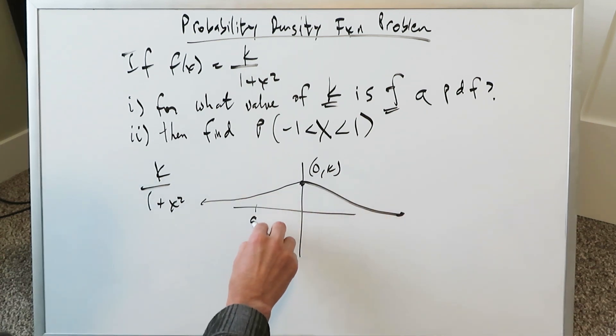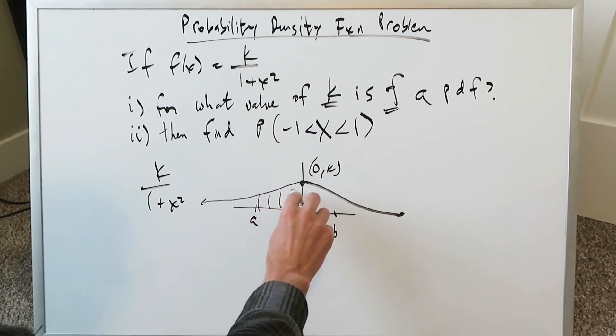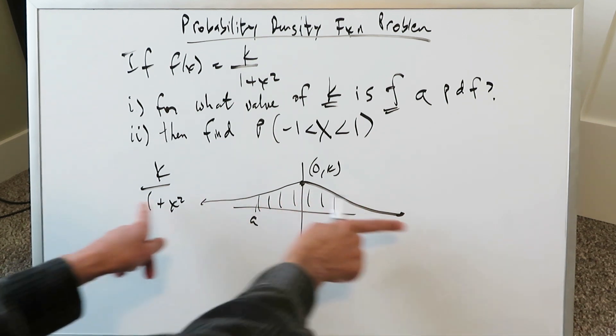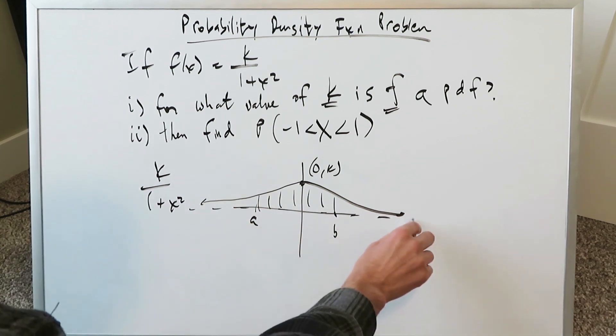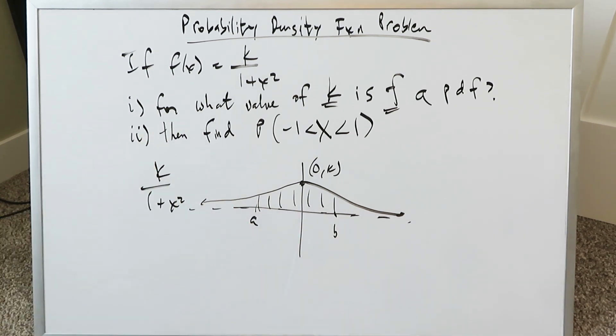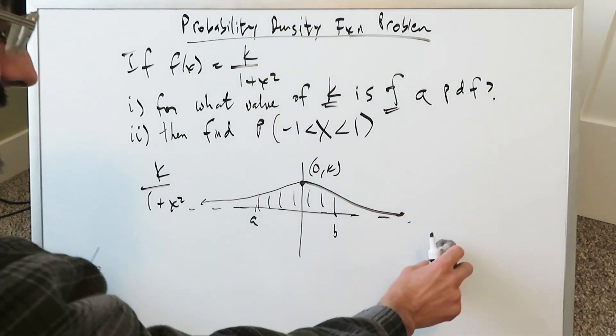It always ends up being a function which looks like this. And then from what are a to b interval, you're then looking at that area. But it looks like this, with the x axis as your horizontal asymptote. So we have to determine the value of k for which this will be a probability density function.